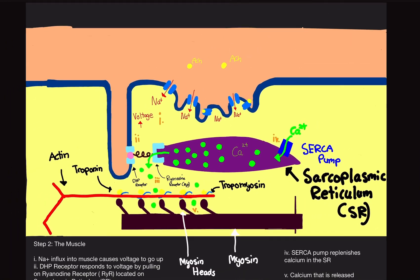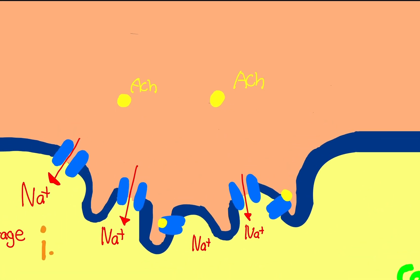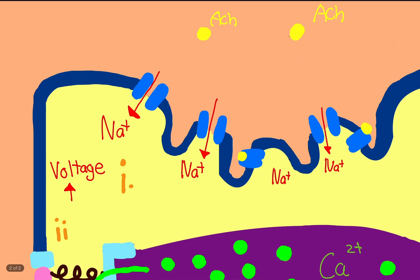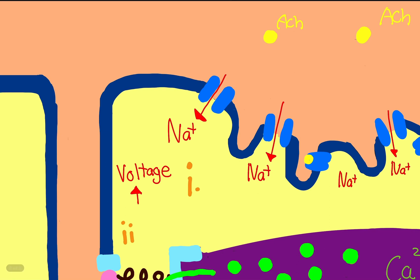So now we're looking just at the muscle — no neurons here, just the muscle. Acetylcholine binds to the receptors here, which causes sodium influx. The voltage-gated sodium channels open and sodium rushes into the cell. When sodium rushes in, the voltage goes up — sodium is positively charged — so the voltage goes up. That's step one.